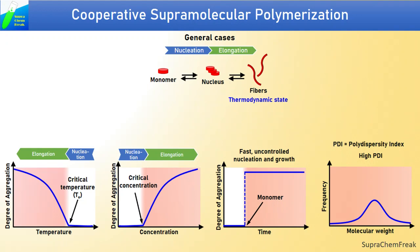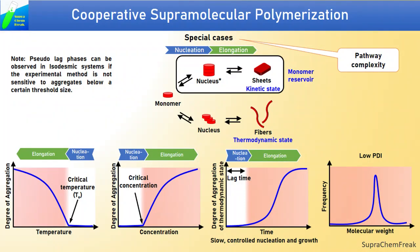Interestingly, pathway complexity during supramolecular polymerization process can retard the uncontrolled nucleation process, resulting in kinetic evolution of the supramolecular polymer. This is depicted by a sigmoidal growth along with a lag phase, which is a hallmark for cooperative growth resulting in low polydispersity index. A point to note is that sometimes pseudo-lag phases can be observed in an isodesmic system if the experimental method is not sensitive to aggregates below a certain threshold size. Recently, pathway complexity has been shown as a method to control the nucleation step by slow buffering of monomers to obtain supramolecular polymers of low polydispersity.